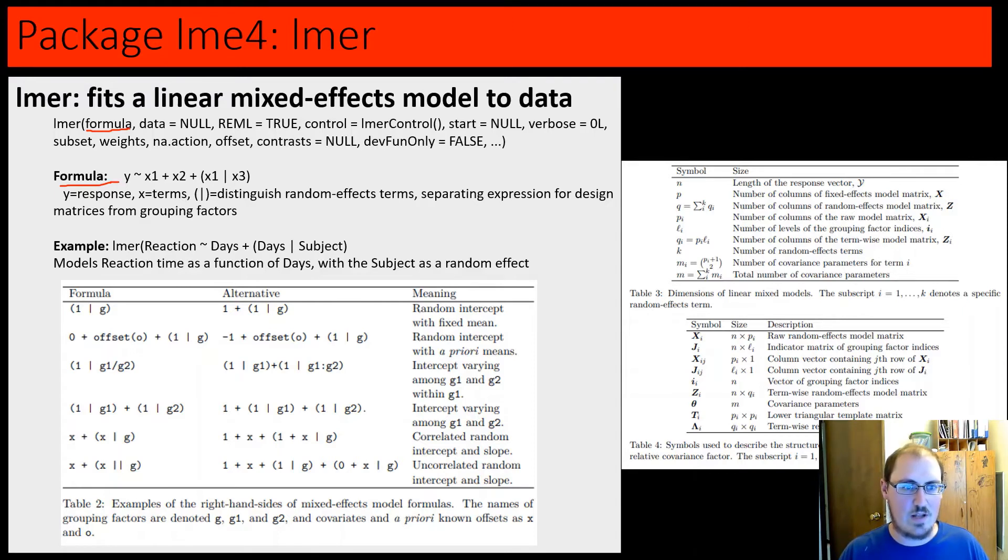The formula looks like this, as we see here. Y is your response. These are our terms. The ones on the out, by themselves, those are fixed effects. While the ones in the parentheses, on the right side here, that is a random effect. Why this is here, is essentially, this random effect is grouped by this fixed effect. So, for example, we could have a linear mixed effects model. Reaction time models as a function of days, with a subject as a random effect within days. And we can see here,